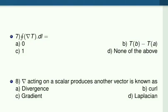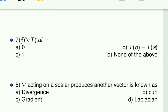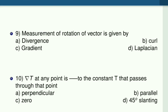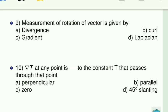Next question: del acting on a scalar produces another vector — as already explained, that is the gradient. If you have any doubt, refer to the gradient video. And: measurement of rotation of a vector is given by — rotation means curl. So measurement of rotation of a vector is known as curl. It is a well-known direct question.